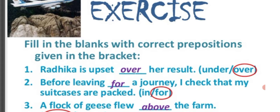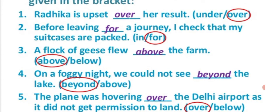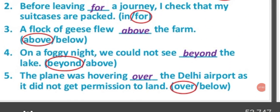Here is one more exercise. Fill in the blanks with correct prepositions from the bracket. Sentence 1: Radika is upset ___ her result — options are over or under — the answer is 'over': Radika is upset over her results. Sentence 2: Before leaving for a journey, I checked that my suitcases are packed — the answer is 'for': before leaving for a journey. This is how you use prepositions.